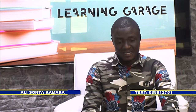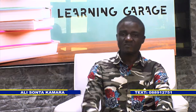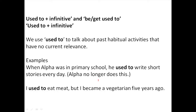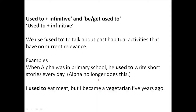The next aspect of this class covers used to, be used to, and get used to — very essential. We use 'used to' to talk about past habitual activity that has no current relevance — something we used to do in the past but are no longer doing. For example: 'When I was in the village, I used to go swimming every Sunday.' That's a past habitual activity.